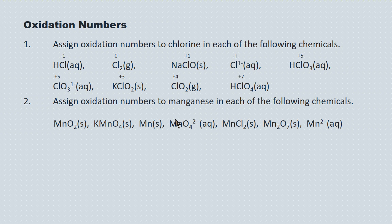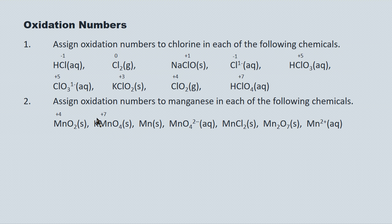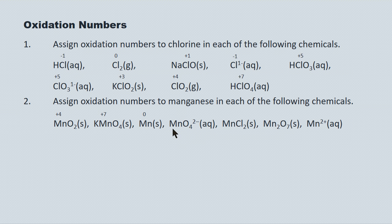Now assign oxidation numbers to manganese. For MnO2, oxygen is minus two with two of them for a total of minus four, so manganese must be plus four to balance out the charge to zero. For KMnO4, oxygen is minus two with four of them for a total of minus eight, and potassium is plus one, so manganese must be plus seven. For elemental manganese, its oxidation state must be zero. For MnO4 2−, oxygen is minus two with four of them for a total of minus eight, and the charge in the particle is two minus, so manganese must be plus six.